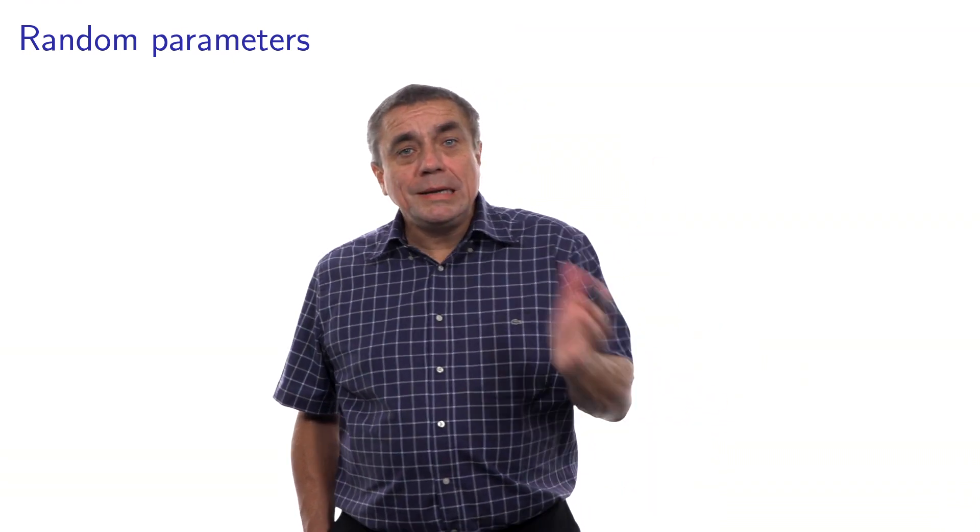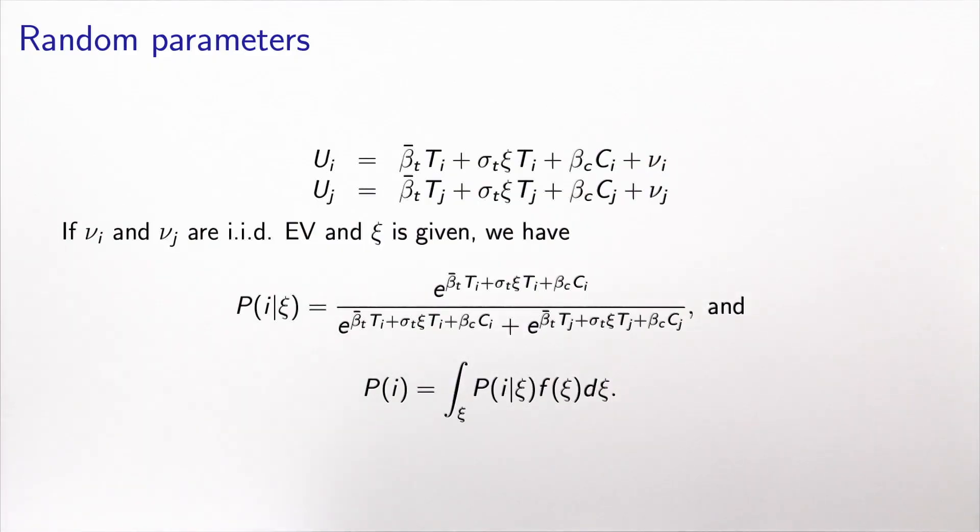To calculate the choice probability, we will first calculate the choice probability conditional to xi, and this is a logit model. And then we will integrate out xi, and we will have a mixture of logit models, exactly as we did before. So the mechanism is exactly the same. That's what we have done in this slide. So we assume that nu_i and nu_j are IID extreme value. First, we assume that xi is given, and therefore, the probability to choose alternative i given xi is given by the logit model. Very simple to write. And now, when we want to calculate the probability, we have to integrate out the xi, and we obtain the mixture of logit models, as we have done before.